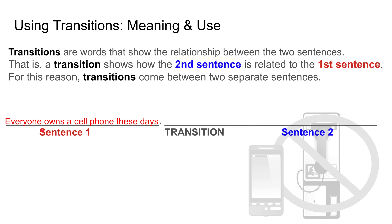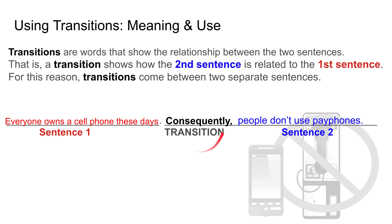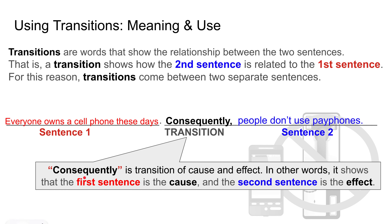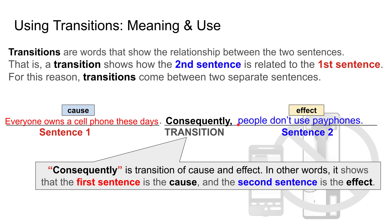Let's look at an example. Sentence one: everyone owns a cell phone these days. Transition: consequently. Sentence two: people don't use pay phones. Here, consequently is showing the relationship between these two sentences. It's a transition of cause and effect — the first sentence is the cause and the second sentence is the effect. Consequently is introducing the effect of the first sentence.